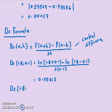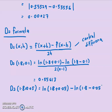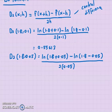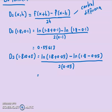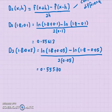Continuing, for D2 with h = 0.05, we compute [ln(1.85) - ln(1.75)] / (2×0.05). Just remember that the argument of ln must always be positive. Using the calculator, we get 0.55570. This is already very close to the exact solution, but we want to show that extrapolation can give an even better approximation.